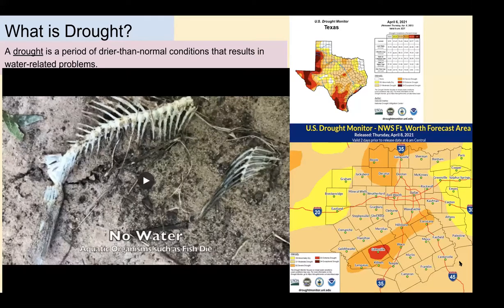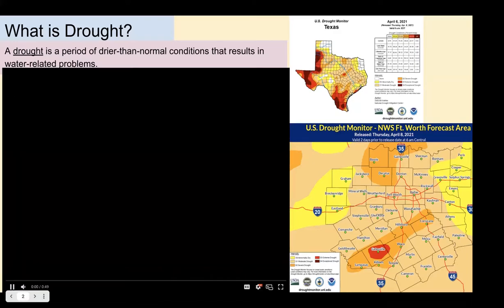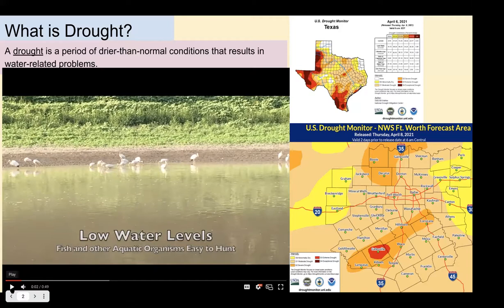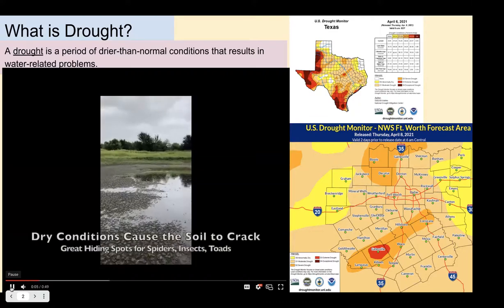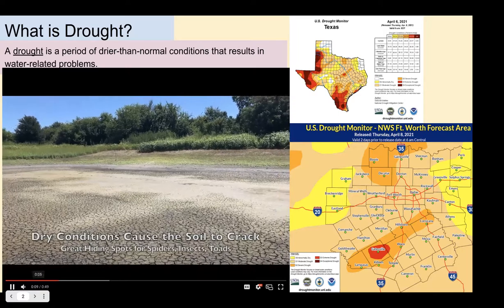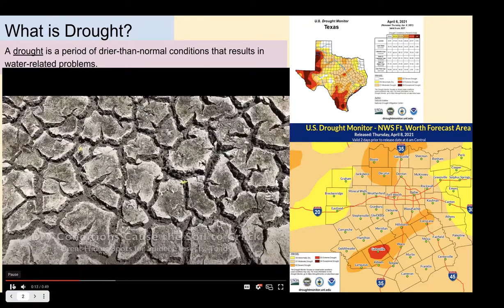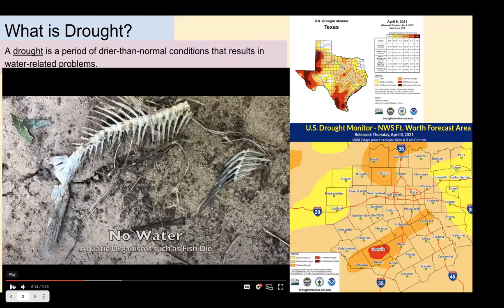We know that drought is simply a period of drier than normal conditions that results in water-related problems. I'm going to show you a quick video of some effects of drought here at the environmental center and in nearby locations. Here's a pond that was actually behind our building — the water level got so low that you could literally see the backs of some fish in the water. Because the water was so low, the fish were super easy for birds to find and hunt — it was kind of like a feeding frenzy those last few days. So low water conditions can actually be beneficial to hungry animals. Here you can see the ground was so dry that it actually cracked. When it's really dry, the soil can shrink or contract, and those cracks actually create good hiding spots or shelters for things like little toads and spiders.